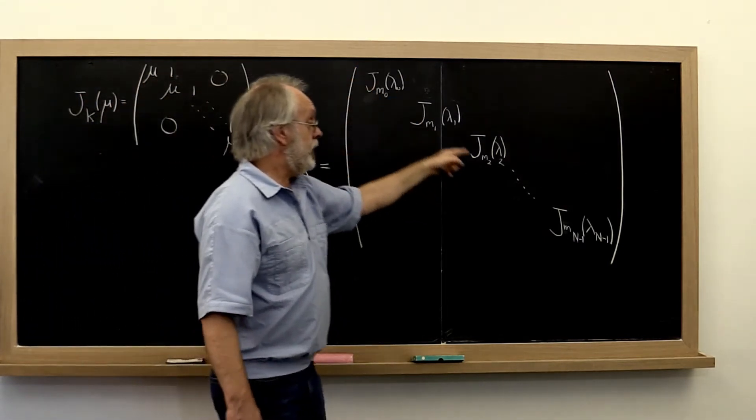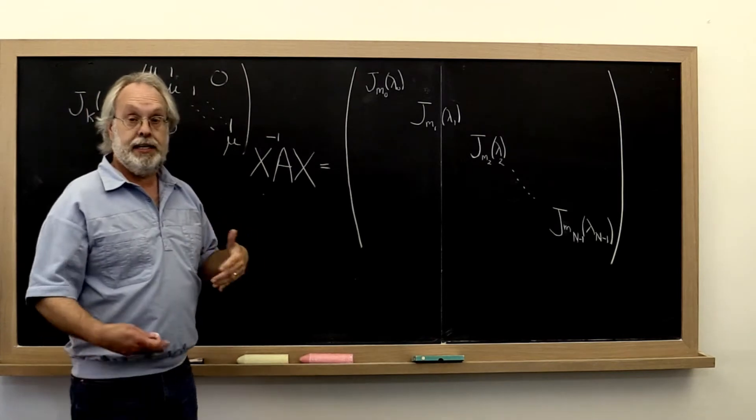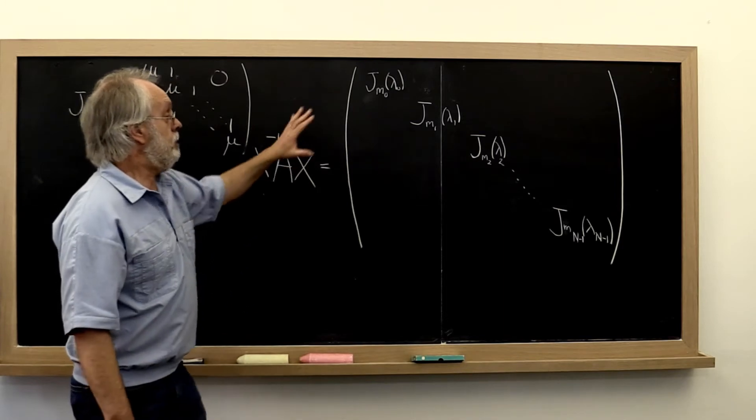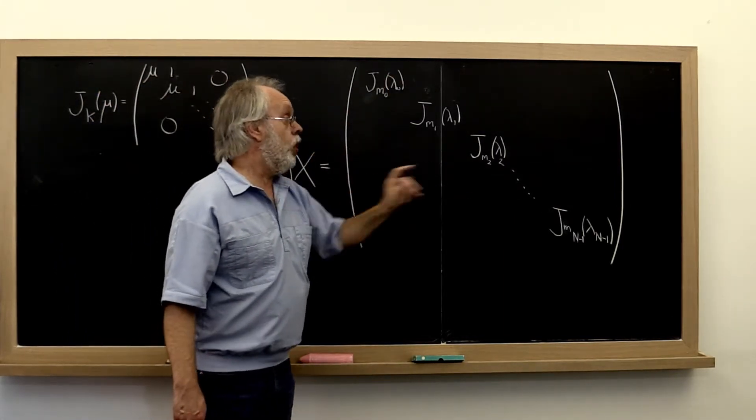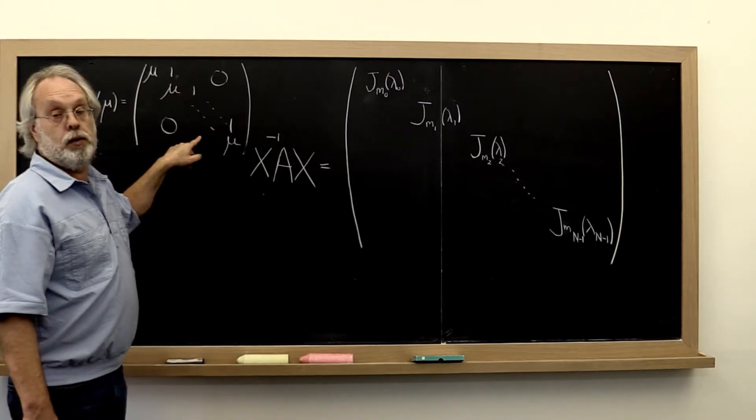If all of these Jordan blocks are one by one, then the matrix in fact is diagonalizable. But in general it may be the case that more or even all of these blocks are proper Jordan blocks that are not one by one.